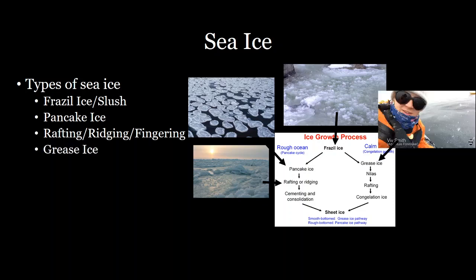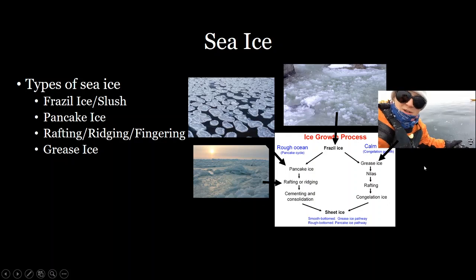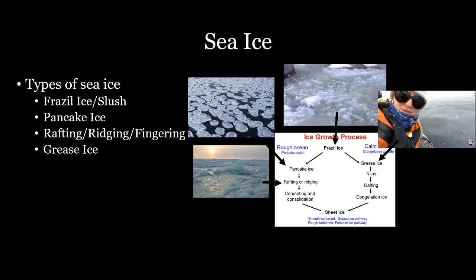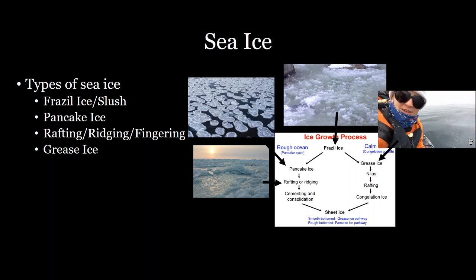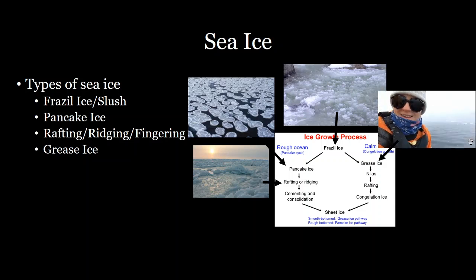For a calm ocean, you have a slightly different process. From the frazil ice, you develop grease ice. The water is so cold it's not allowing snow to melt when it hits the water. It's called grease ice because it looks like a layer of oil in the water.